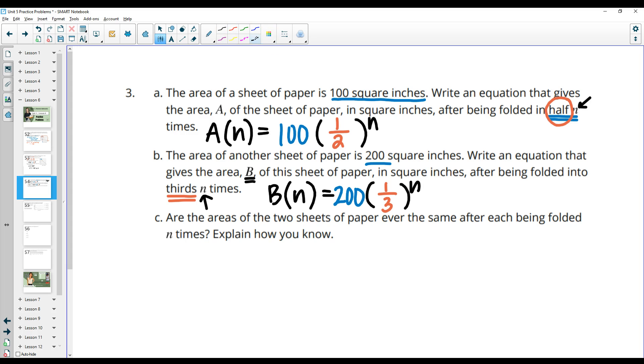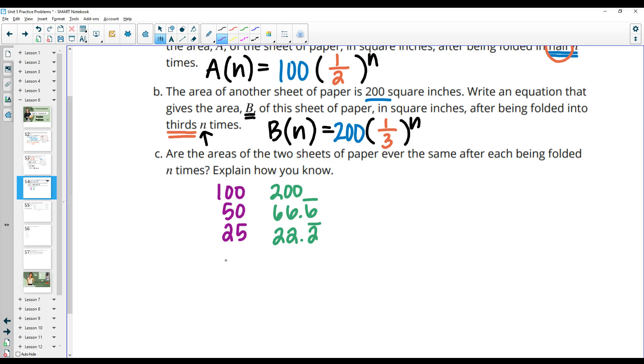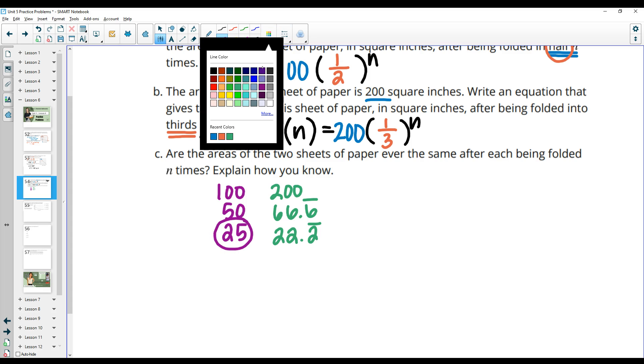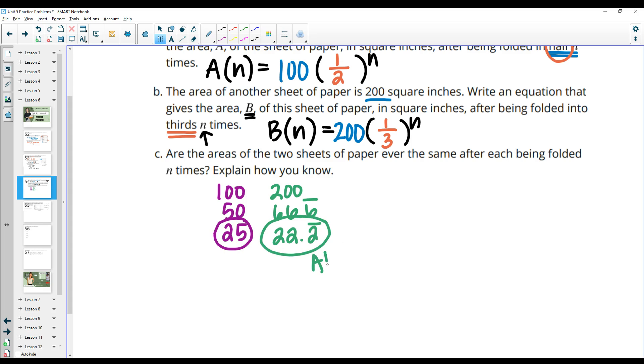Are the areas of the two sheets of paper ever the same after being folded n times? So if we take this first one here and we just think about it. So if we take 100 and we fold it in half, the next time it'll be 50, then it'll be 25. If we look at the other paper that's being folded in thirds, so 200 divided by 3 is 66.6 repeating. If we divide that by 3 again, then we get 22.2 repeating. So we can see that they've never been the same so far. And then if you think about if we cut this in half, this paper is now larger. And cutting it in half isn't going to get less than cutting it in thirds. So this one is now always smaller because half is going to be like 12 and a third of this is going to be like 7 something. So the purple one's always going to stay larger. So they're never going to be the same.